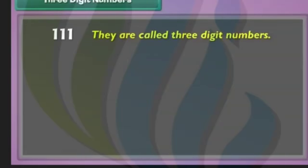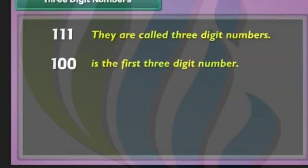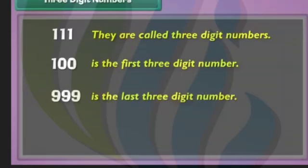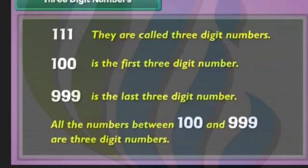Numbers that have three digits in them are called three-digit numbers. Hundred is the first three-digit number — it is the smallest three-digit number. Nine-hundred and ninety-nine is the last three-digit number, and therefore it is the largest three-digit number. All the numbers between hundred and nine-hundred and ninety-nine are three-digit numbers.